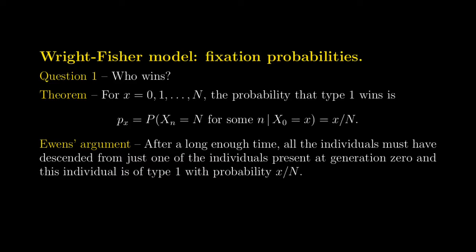Given that we start with x type 1 individuals, we were able to answer this question in the previous video by proving a theorem: starting with x type 1 individuals, the probability that type 1 eventually wins is equal to x over N — that is, the initial fraction of type 1 individuals in the system.